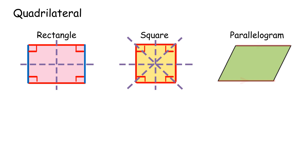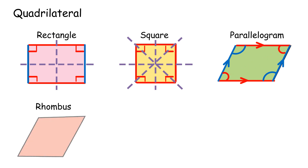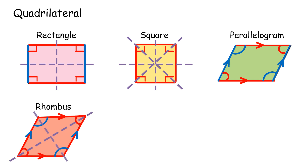Parallelogram: the opposite sides are parallel and of equal length, opposite angles are equal, the diagonals bisect each other, and it has no axes of symmetry. Rhombus: all sides are of equal length, opposite sides are parallel, opposite angles are equal, the diagonals are perpendicular bisectors of each other, and it has two axes of symmetry.